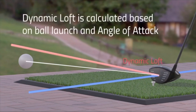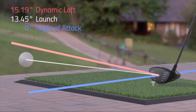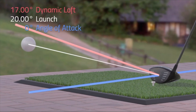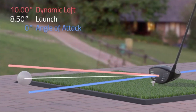The dynamic loft is actually calculated from the launch angle of the golf ball. They use a very complex algorithm that integrates the angle of attack, club head speed, and launch of the ball in order to calculate the dynamic loft at the impact point.